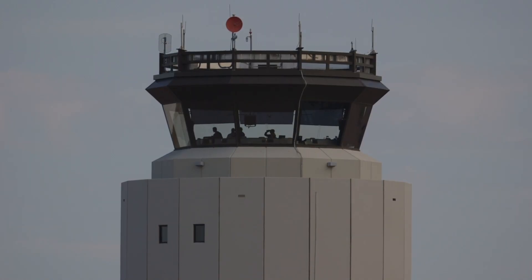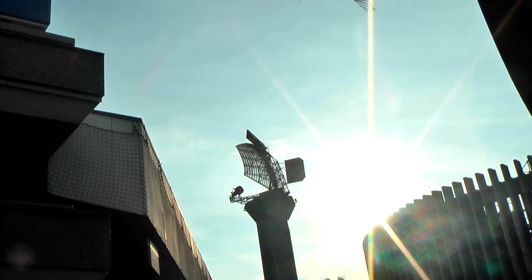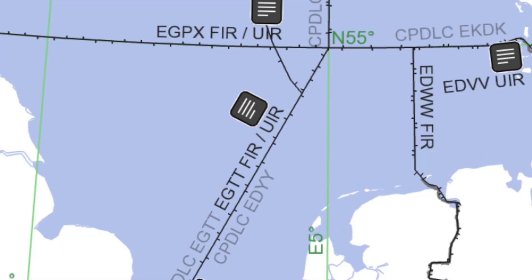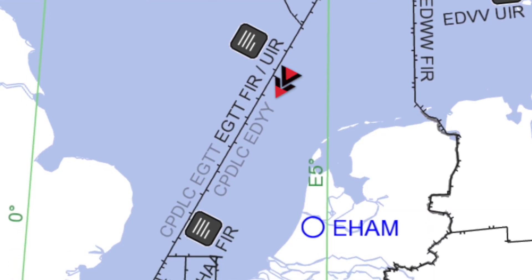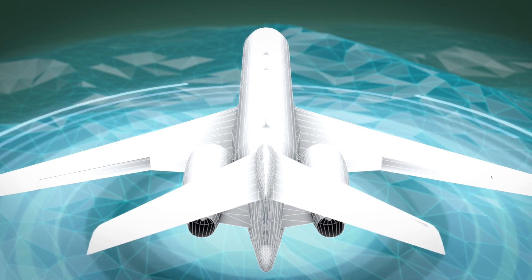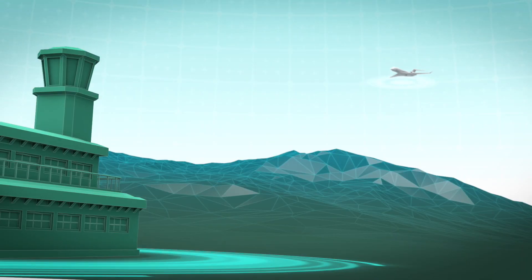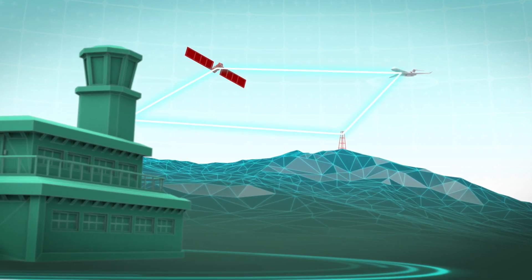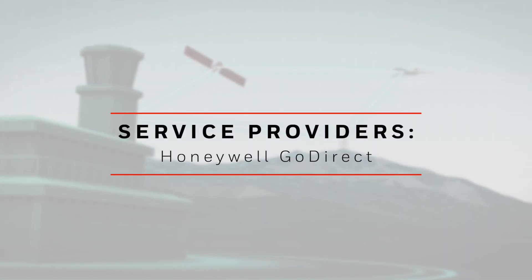Datalink services improve communications and surveillance by supplementing voice communications and radar surveillance. As a result, many airspaces around the world now require Datalink capability. A Datalink system contains the Datalink equipment on the aircraft, an operations or ATC station on the ground, and a communications network. Sometimes Datalink systems can include one or more service providers.